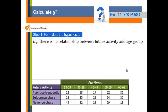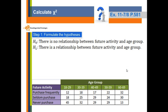You can also say: future activities does not depend on the age groups. And the alternative hypothesis is: there is a relationship between future activity and age group. In other words, future activities depends on people's age groups. The alpha level is given in the question, which is 0.01.